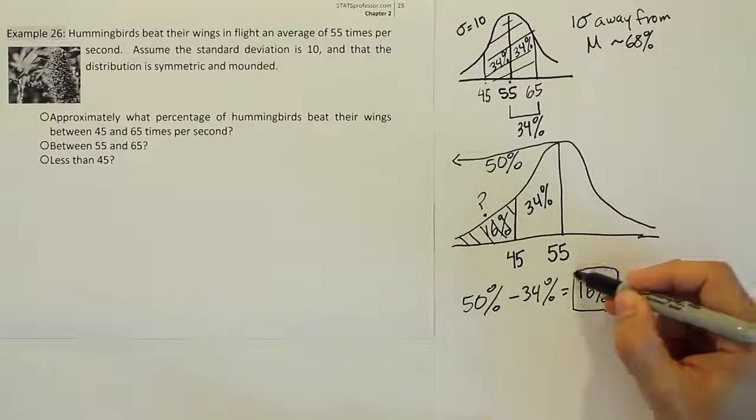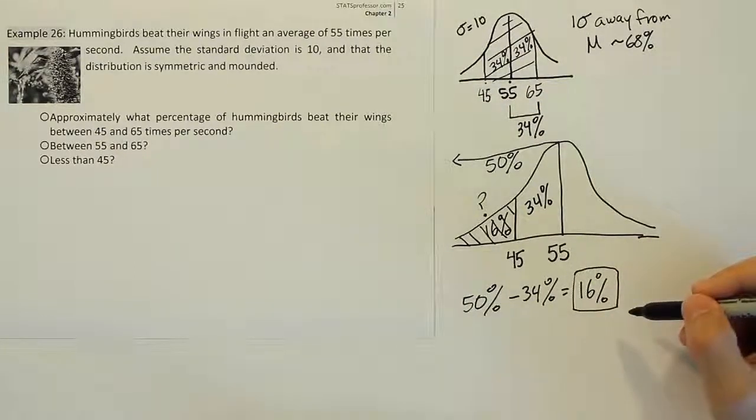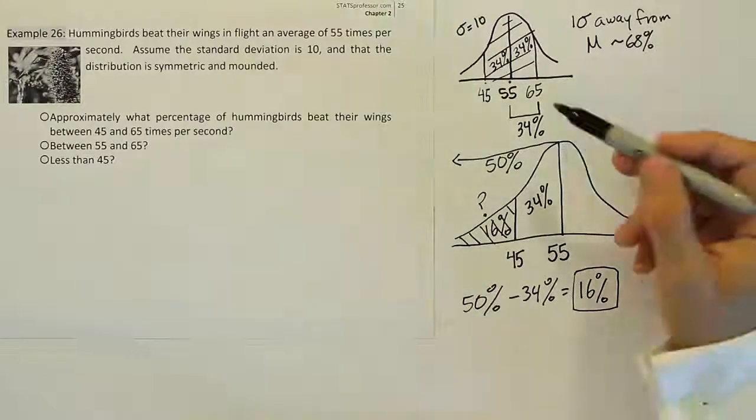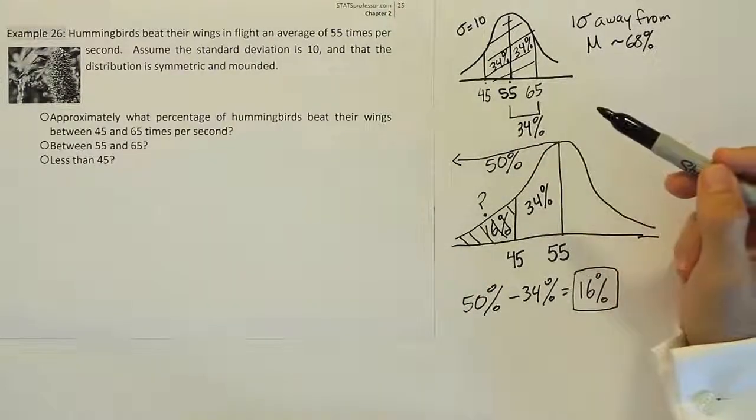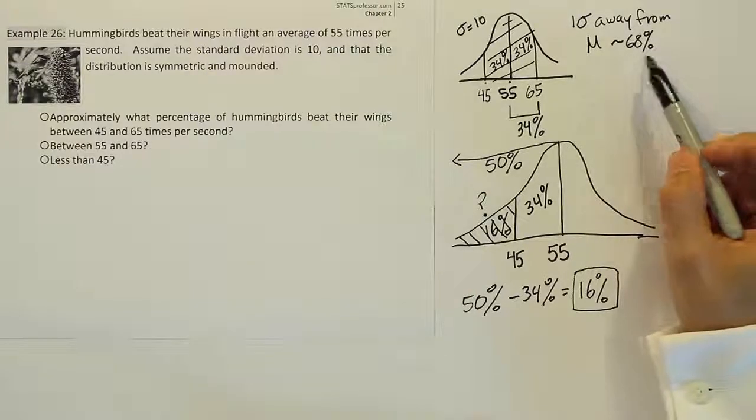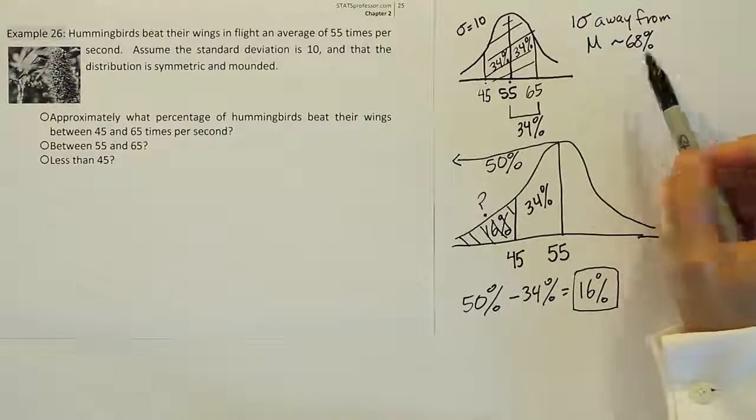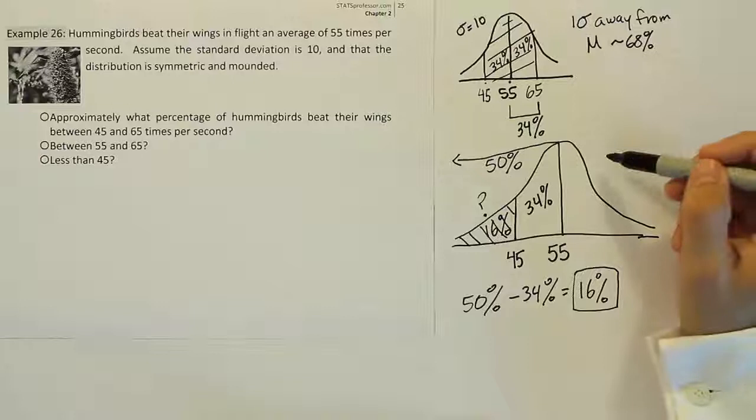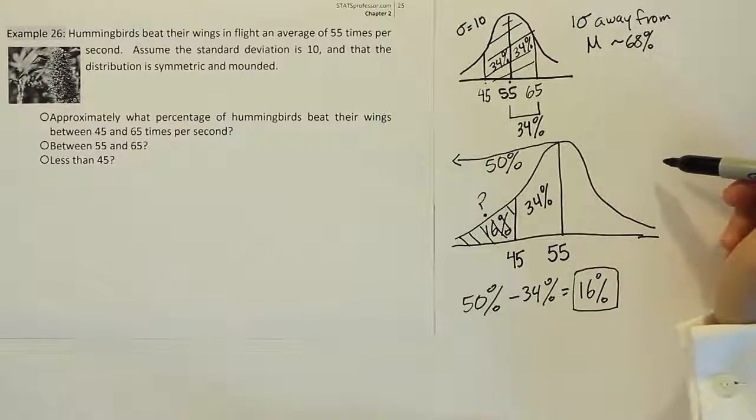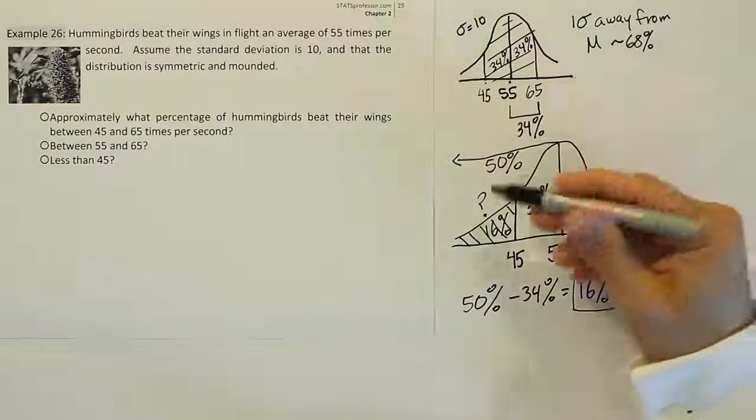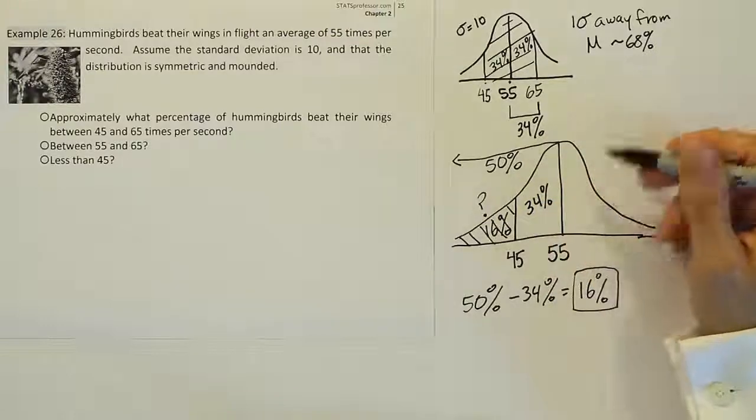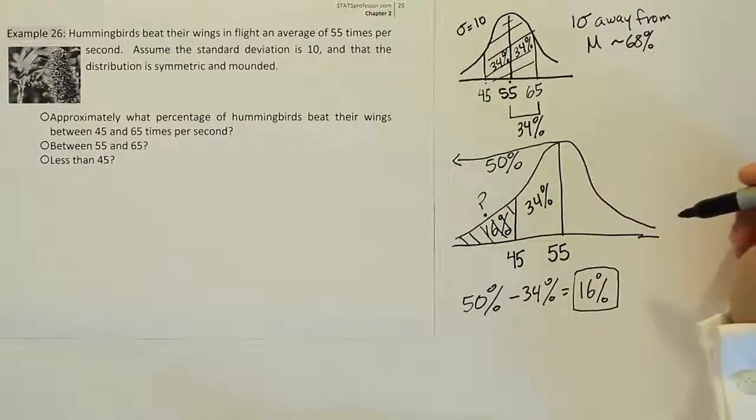And that's the general approach when solving these problems using the empirical rule. You always do a drawing, and then from the drawing just count out standard deviations and use those memorized rules. You know, one standard deviation is 68%, two captures 95%, and three standard deviations capture 99.7%. Use those together with logic to figure out any area you're looking for under the curve.